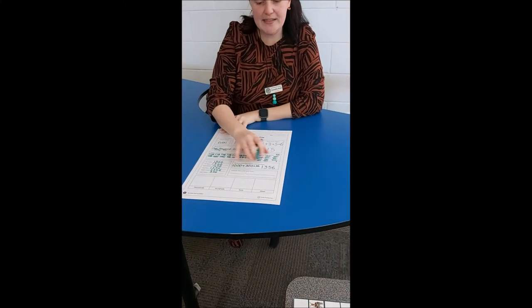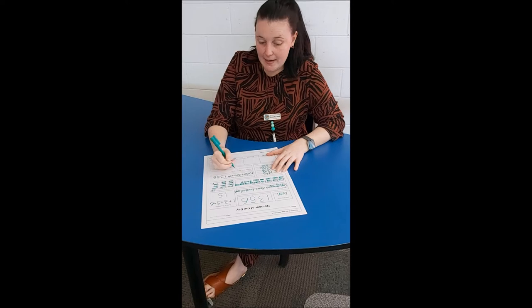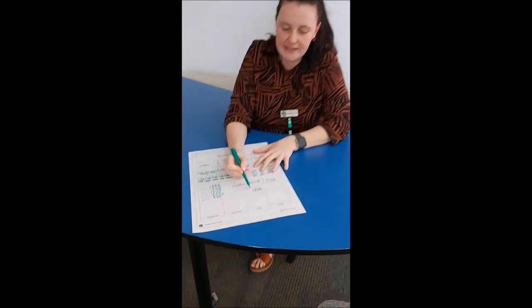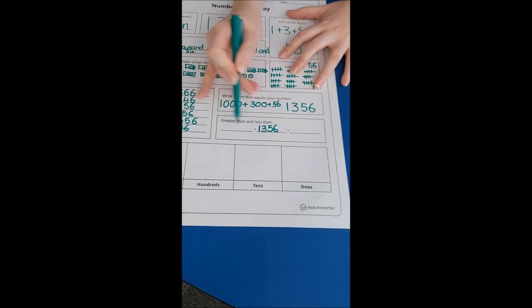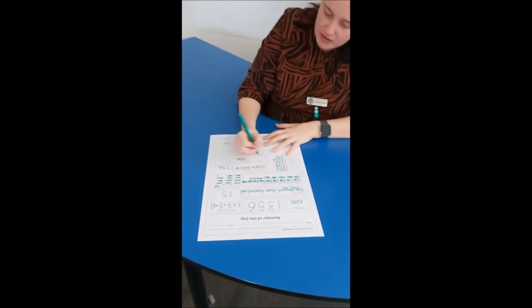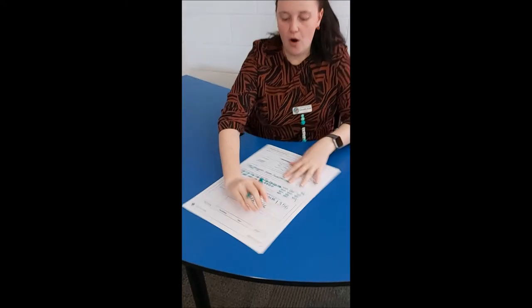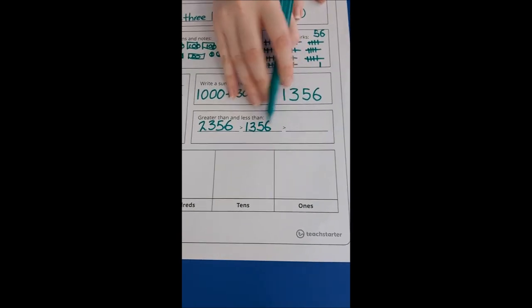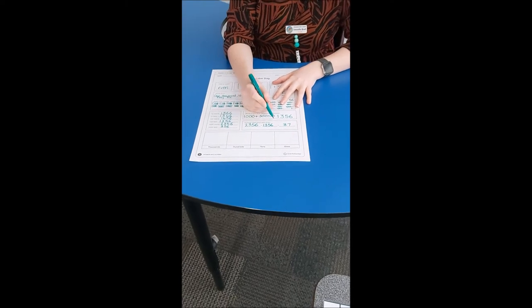Now we need to have a look at greater than and less than. I'm going to put my number, 1,356, in the middle. On this side, this is the greater than symbol — remember, the crocodile's jaws want to eat the bigger number — so I might choose 2,356 as a number greater than 1,356. On this side the symbol points to the smaller end, so I might choose 37, which is any number less than 1,356.